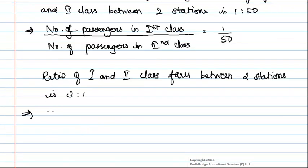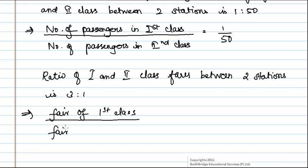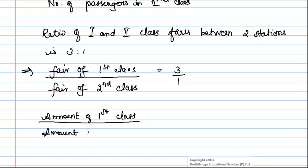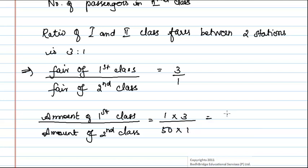This we can write as fare of first class by fare of second class is equal to 3 by 1. From this we can find the ratio of amount of first class by amount of second class, which is equal to number of passengers in first class into fare of first class divided by number of passengers in second class into fare of second class.